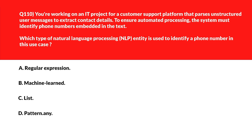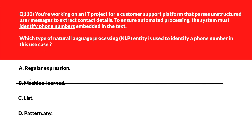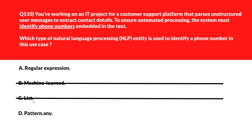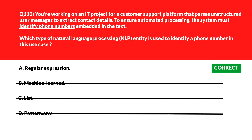Here's an interesting question about types of natural language processing. Option A says Regular Expression — regular expressions allow identifying recurring numeric patterns like phone numbers using rule-based matching, so let's keep this. Option B says Machine Learning — machine learning is not required when the pattern is fixed and predictable like a phone number, so let's delete this. Option C says List — a list can't recognize values like phone numbers unless every possible number is pre-listed, so this is out. Option D says Pattern Any — Pattern Any doesn't provide specificity for structured values such as phone numbers, so wrong answer. We'll lock option A, Regular Expression, as the right answer.